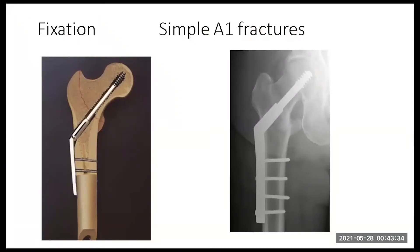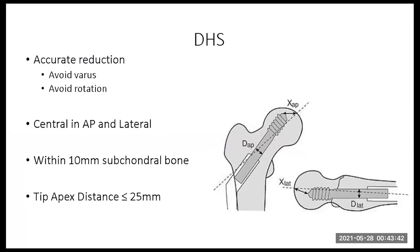A1 simple fractures can be adequately fixed with a DHS. However, one should achieve accurate reduction, avoiding varus and rotation. The lag screw should be central in the AP and lateral views and within 10 millimeters of the subchondral bone. If it is very osteoporotic bone, we can deeply insert the lag screw up to five millimeters from the subchondral bone. Remember, the tip apex distance is important and should not be more than 25 millimeters on the AP and lateral added together, as beyond that there is a high risk of screw penetration.